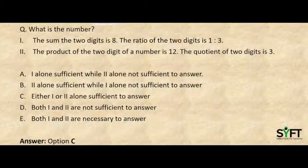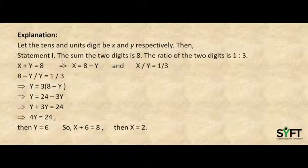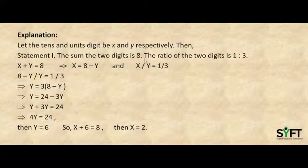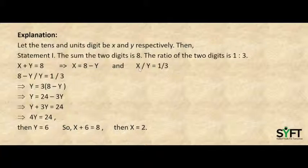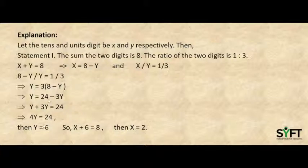We will evaluate the statements. For Statement 1 — the sum of the two digits is 8 and the ratio of the two digits is 1:3 — let the tens and units digits be x and y respectively. Then x + y = 8, so x = 8 − y. And x/y = 1/3. Substituting the value of x, we get (8 − y)/y = 1/3. Simplifying this equation gives 4y = 24, so y = 6. Therefore x + 6 = 8, which gives x = 2. So Statement 1 alone is sufficient to determine the number.